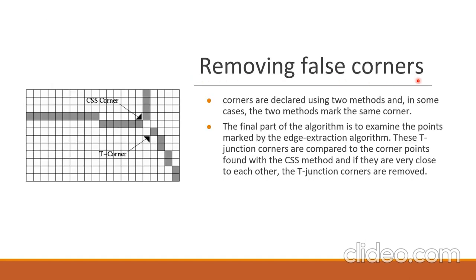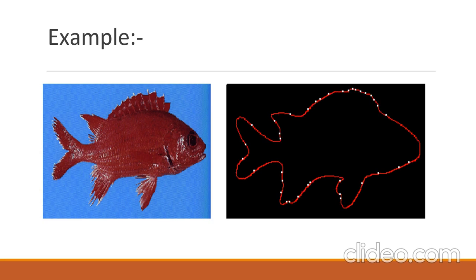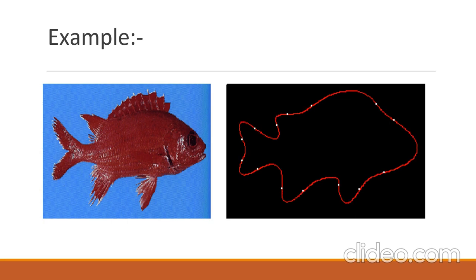The final modification is removing false corners. We start with T-junction corners because they are truly real corners, and then corners are updated using curvature values, initial corners, and tracking. In this procedure, a corner might be detected twice — once due to the curvature of the continuous contour and once at the same location due to the T-junction corner, as in the case of a Y-junction. So T-junction corners are compared to the corner points found with the CSS method, and if they are close to each other, the T-junction corners are removed. The whole process — initial corners, tracking, and removing false corners — is shown here.